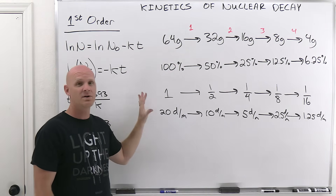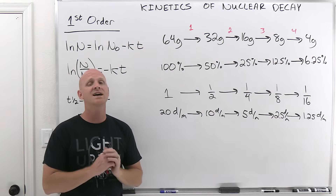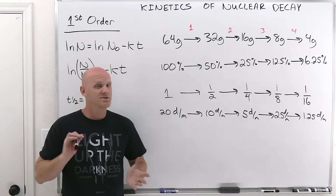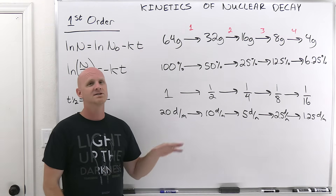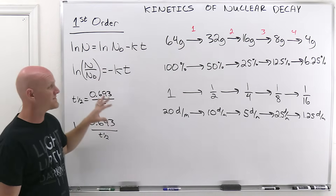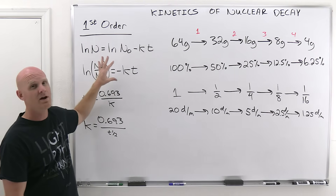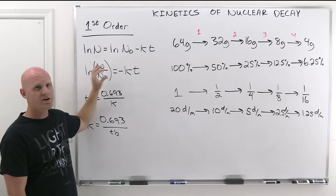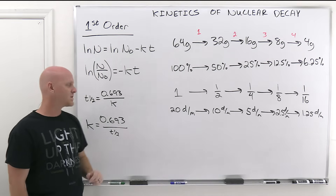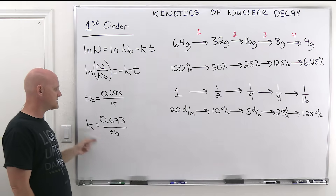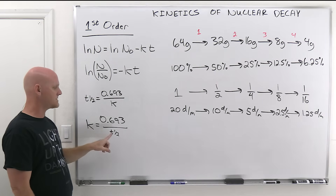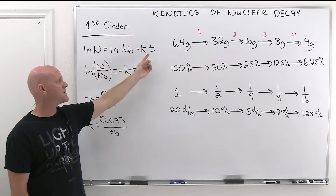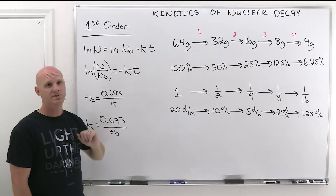Whether it's the exact mass of the nuclei, the percentage, the fraction, or in terms of activity, it all leads to the same kind of calculations. If you're given a perfect number of half-lives, you can do that in your head — just keep dividing by 2. But if it's not a perfect number of half-lives, you've got to resort back to the first-order integrated rate law, using k = 0.693 over the half-life, then substituting into the integrated rate law to solve for time or the unknown variable.